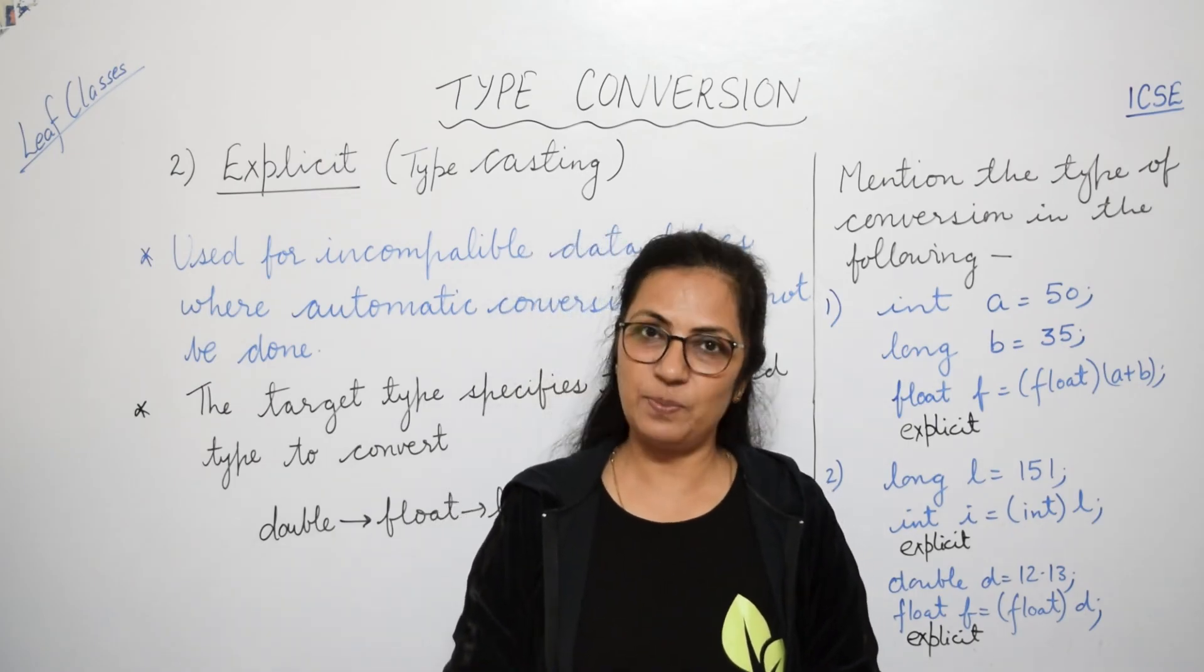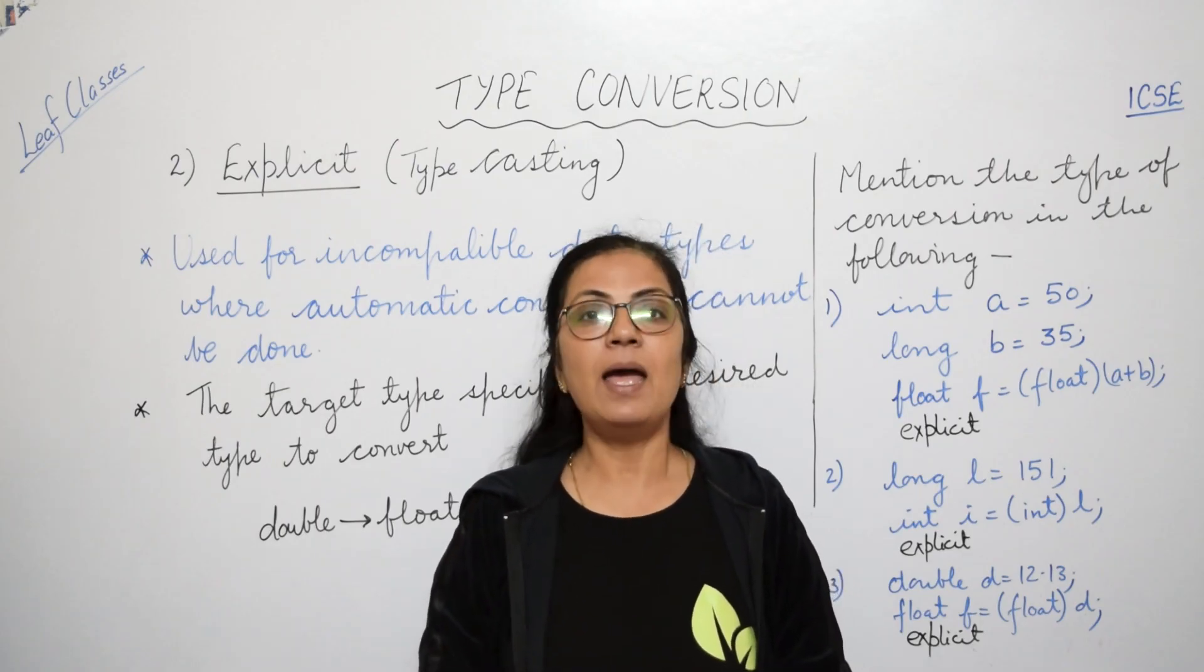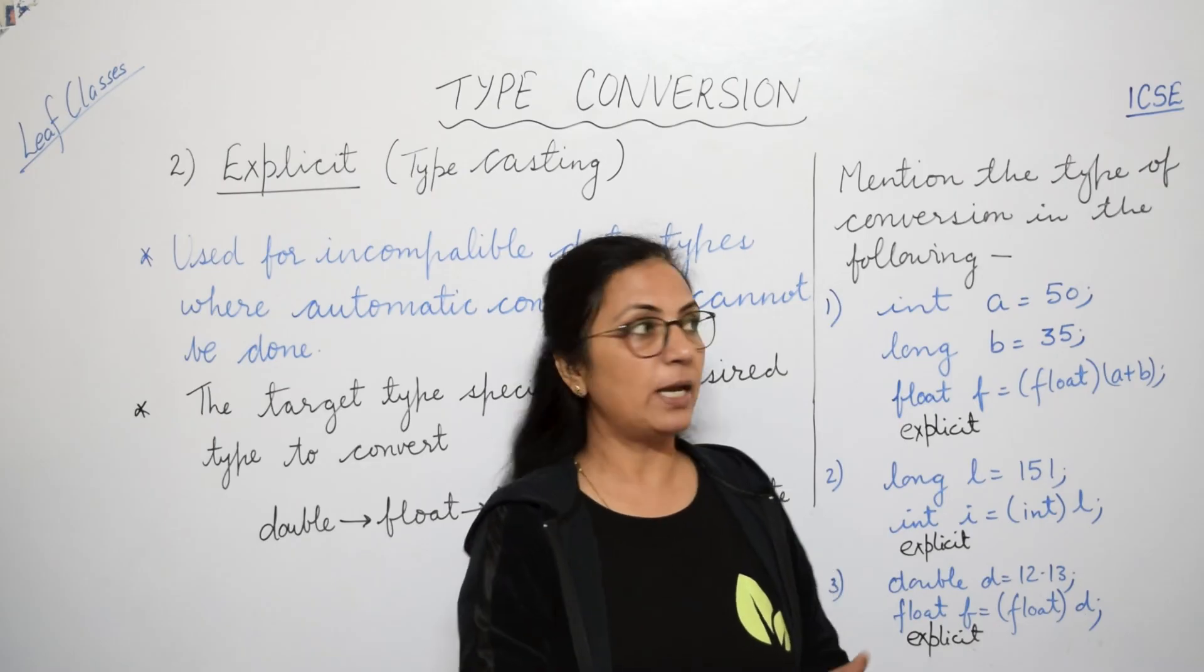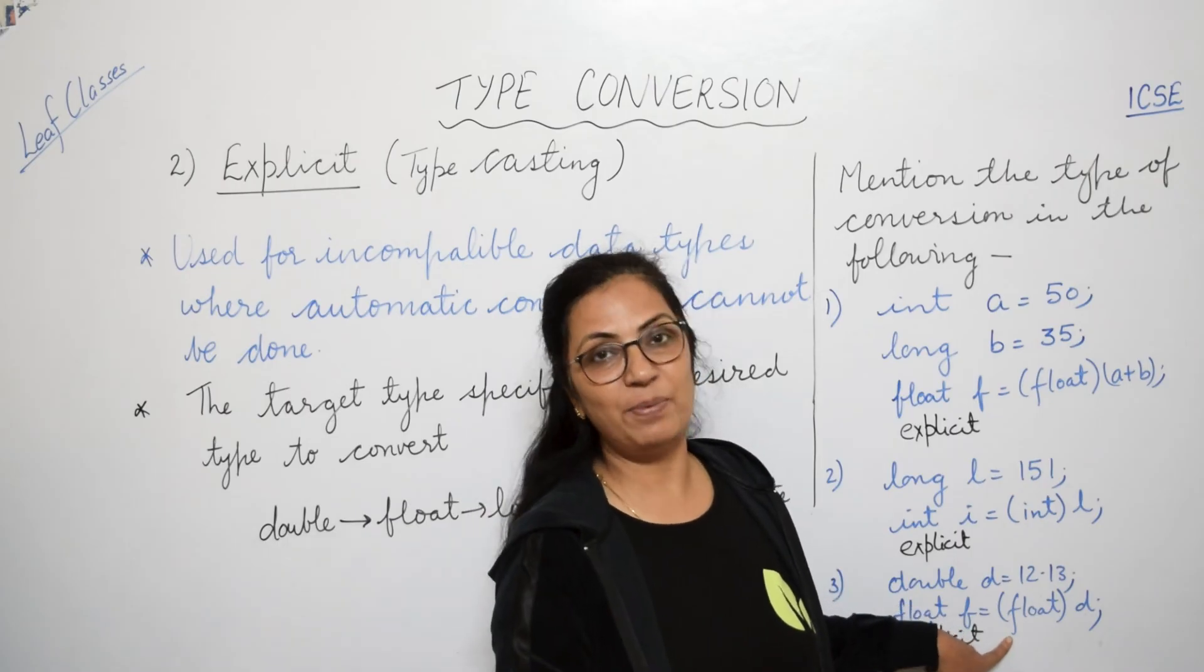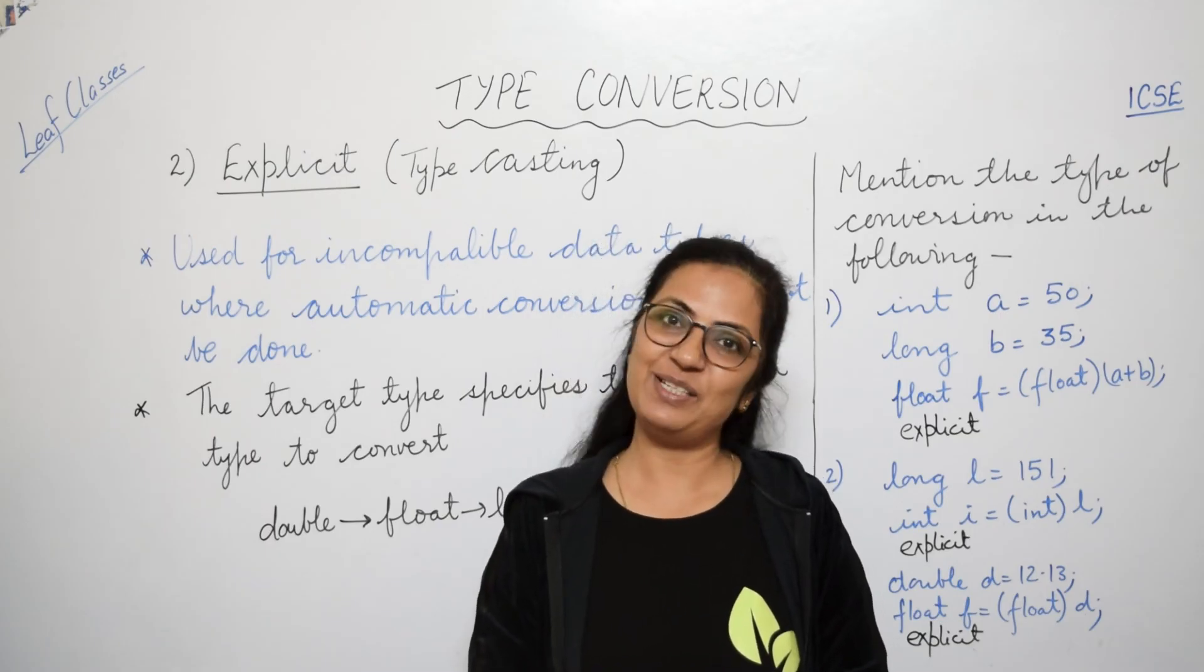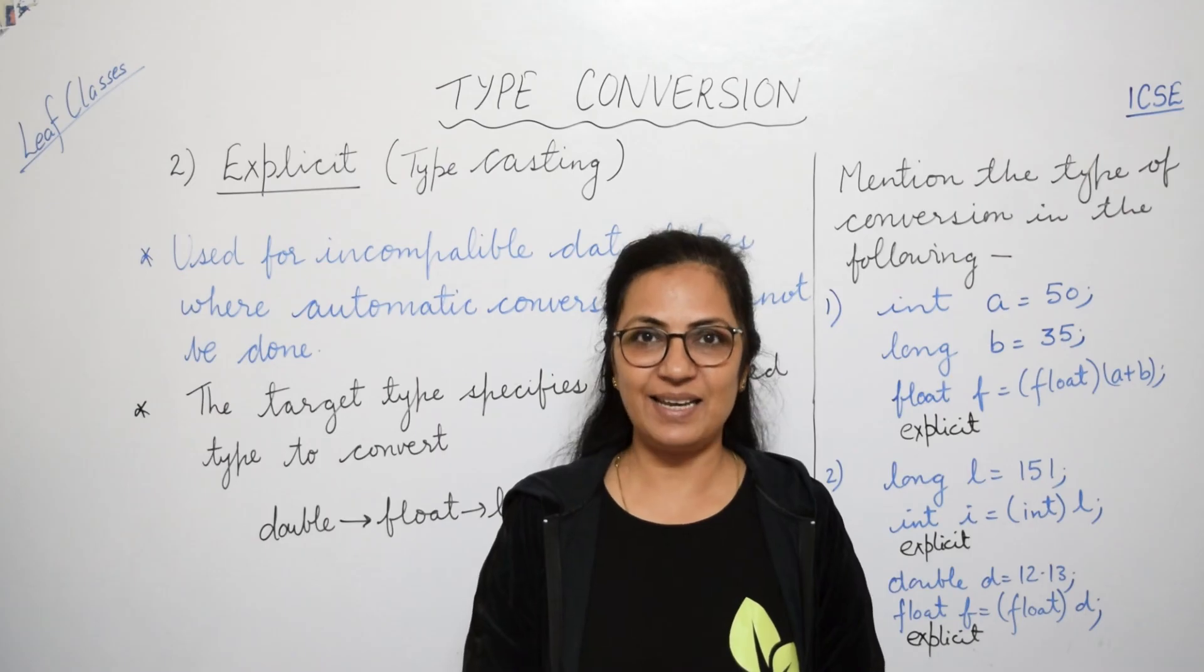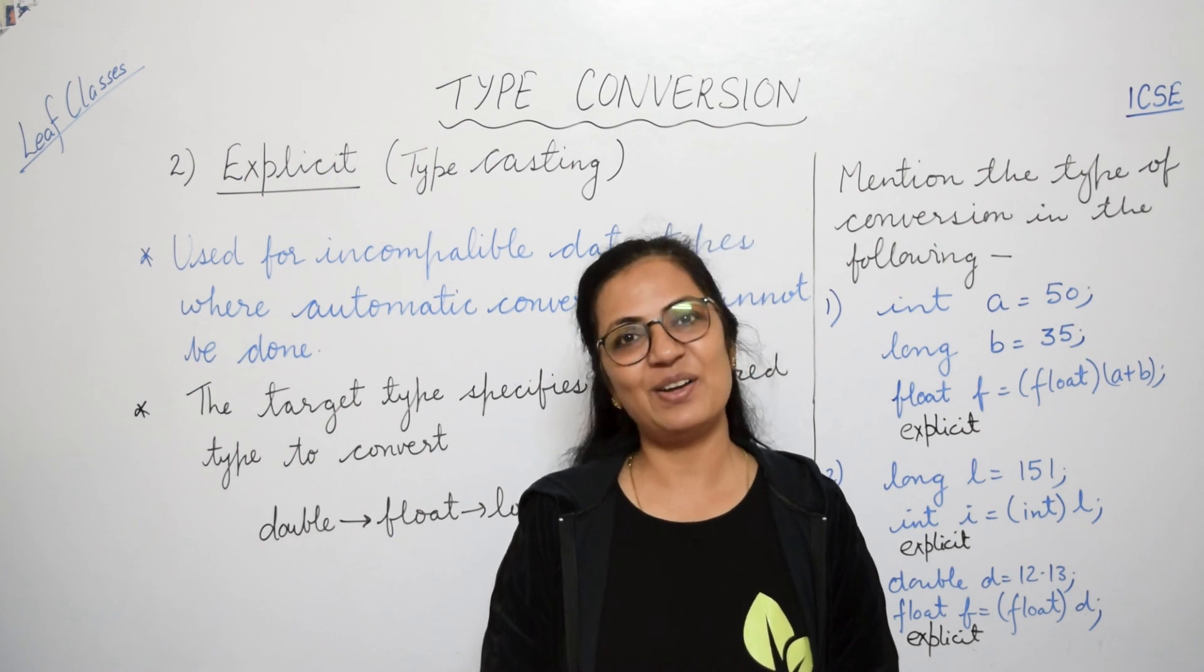So children, I suppose implicit and explicit conversion is clear to you. Implicit conversion is done automatically by the compiler, and explicit conversion needs user intervention. So I hope this will help you in your preparation for the exams. For today, this much only. And if you haven't subscribed the channel till now, please do subscribe and press the bell icon so that you get the notifications for all the videos and no important topic is missed by you. You may join us on our telegram channel also. The link is there in the description box. Keep practicing, keep working hard. God bless you, children.